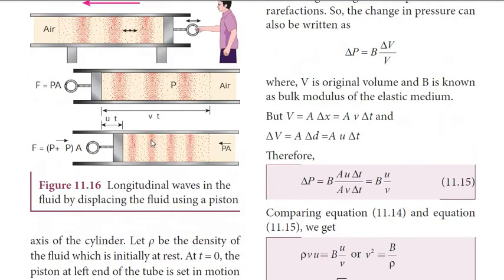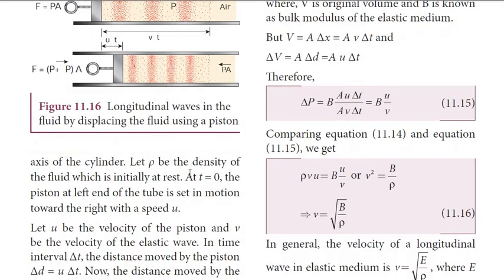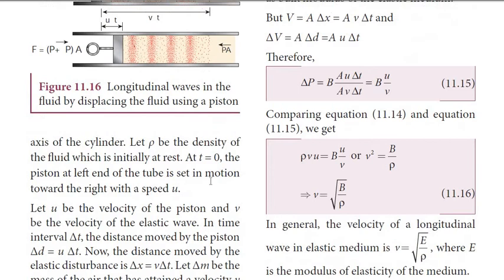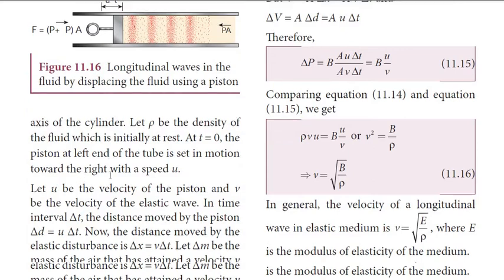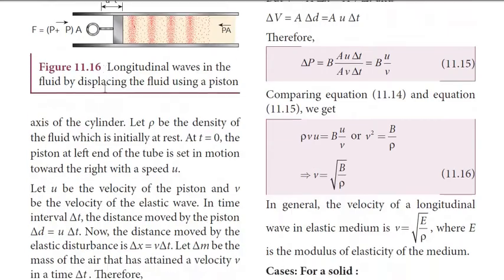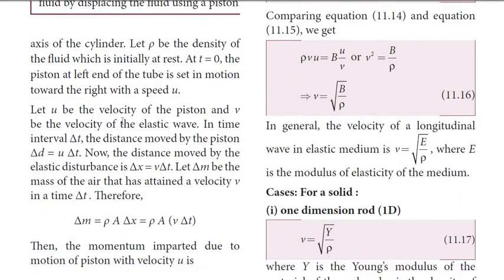Let rho be the density of the fluid, which is initially at rest at time t equal to zero. The initial pressure in the air is also zero. The position at the left end of the tube is set in motion towards the right with speed u. Let u be the velocity of the piston and v be the velocity of the elastic wave.